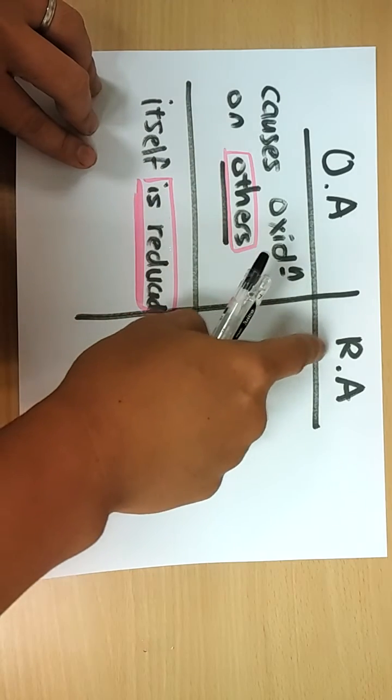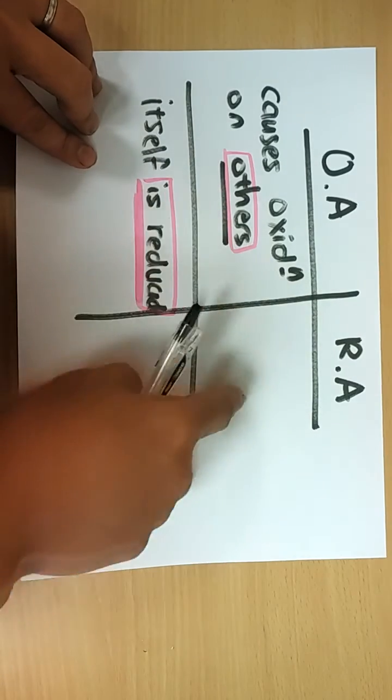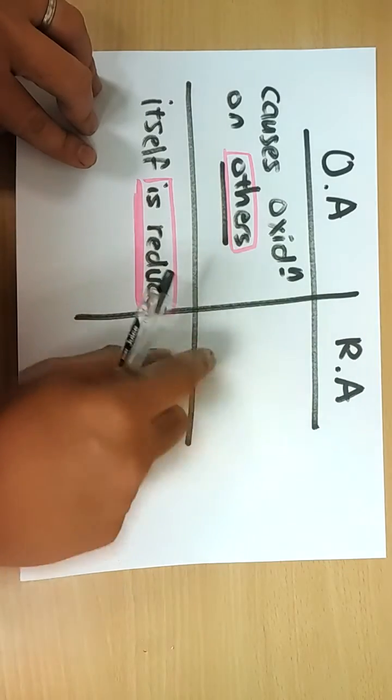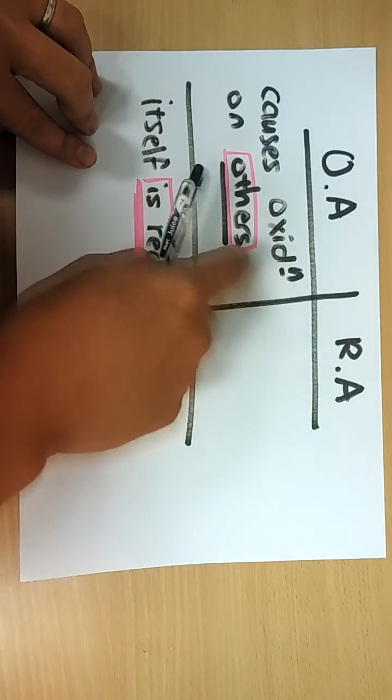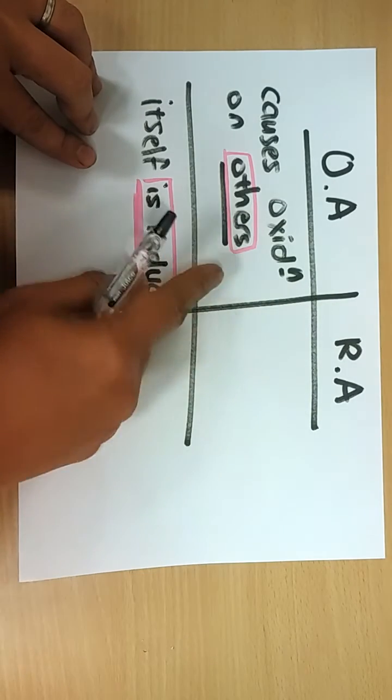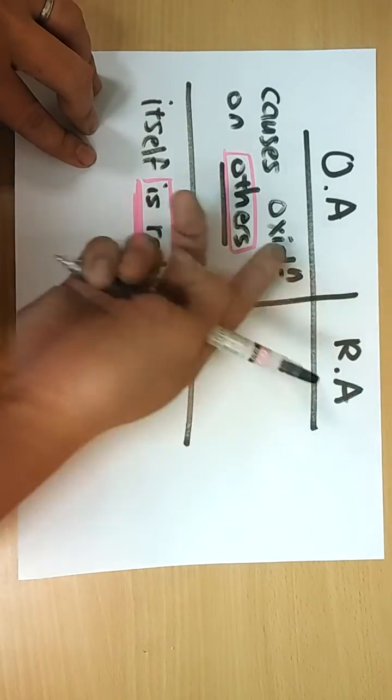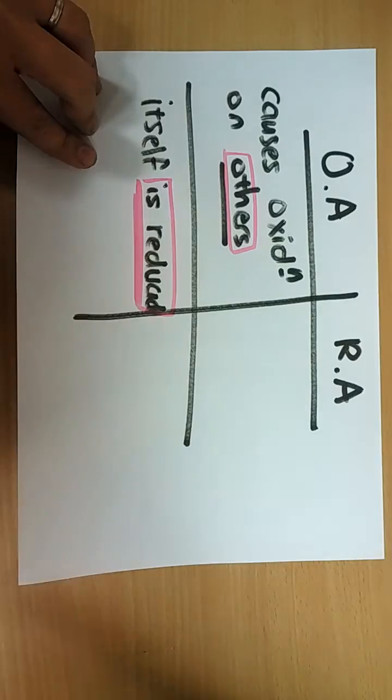For the reducing agent, it's totally the reverse, and it can be confusing if you learn both. So strategy-wise, just learn one side — the other side is the opposite.